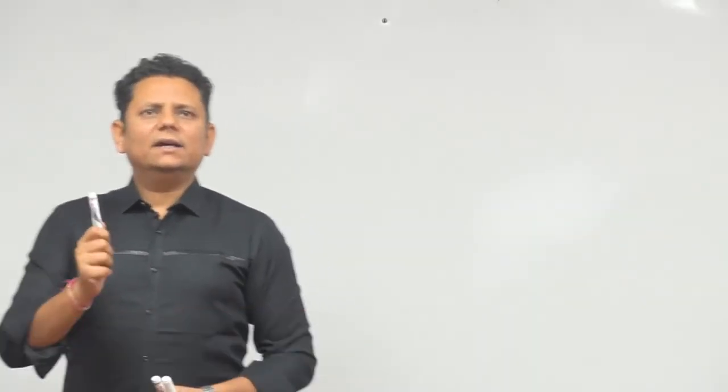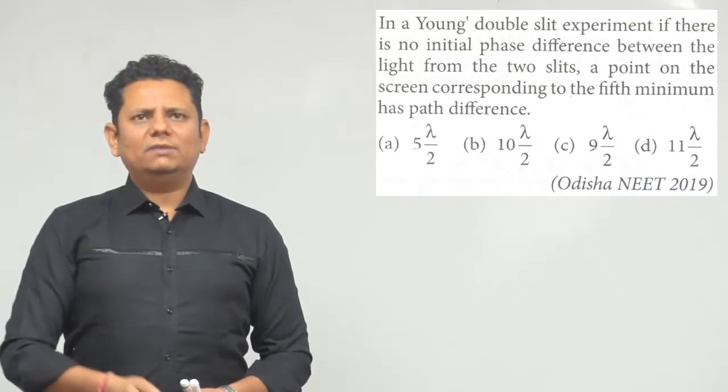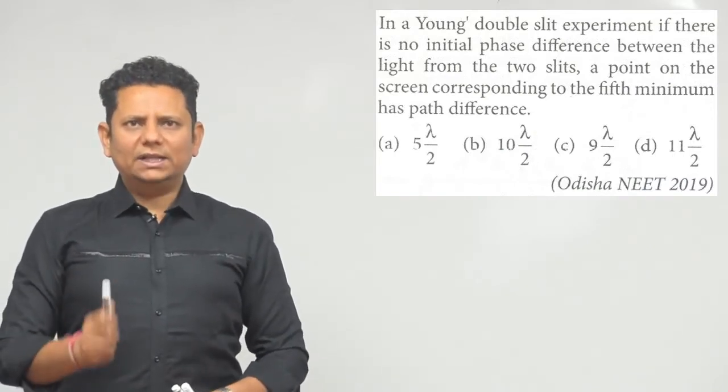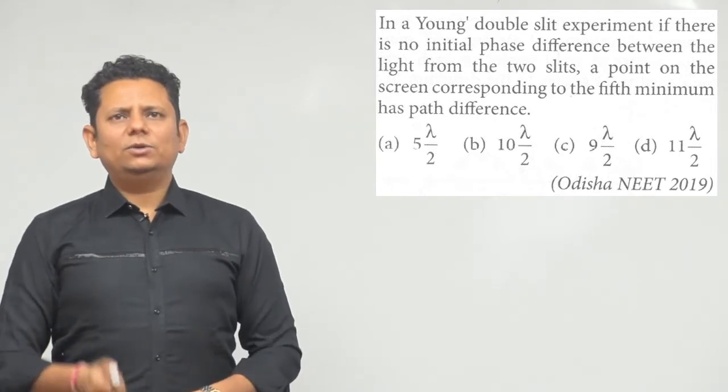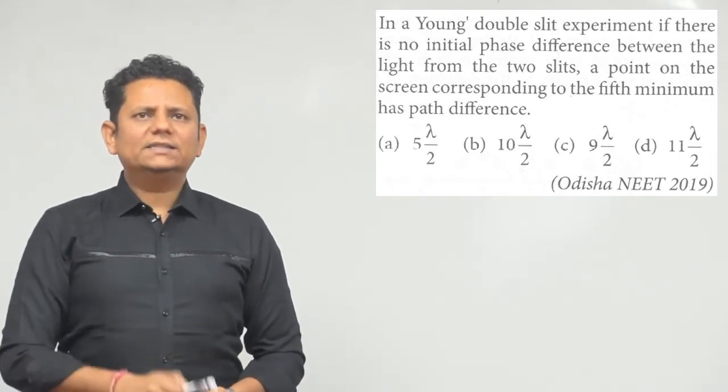Next question - it's from 2019. It says: in a YDSE setup, if there is no initial phase difference between the light from the two slits, a point on the screen corresponding to the fifth minimum has a path difference.